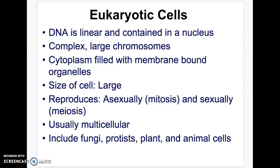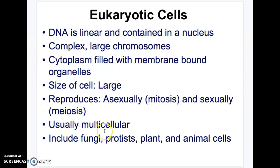Eukaryotic cells — 'eu' rhymes with 'do,' and that 'do' means they do have a nucleus. They're very complex and large. The DNA is the double helix, contained in a nucleus. They have lots of membrane-bound organelles. They can reproduce asexually through mitosis — cell division making clones — or sexually using meiosis, making sperm and egg. They're usually multicellular, though protists are unicellular eukaryotes. These include fungus, protists, plants, and animal cells.